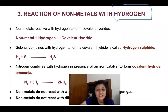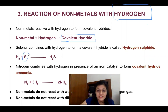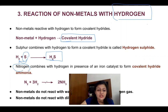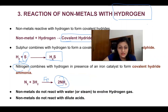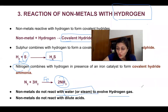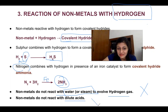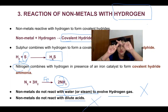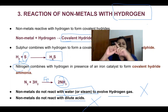When non-metals react with hydrogen, they form covalent hydrides. When nitrogen reacts with hydrogen in the presence of iron as a catalyst, it forms ammonia — this is a covalent hydride. Non-metals do not react with water or steam to evolve hydrogen gas, and they do not react with dilute acids.